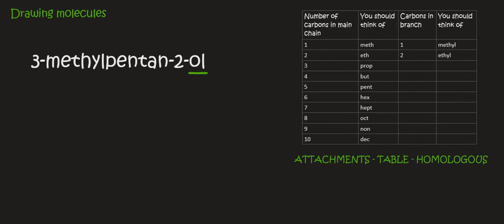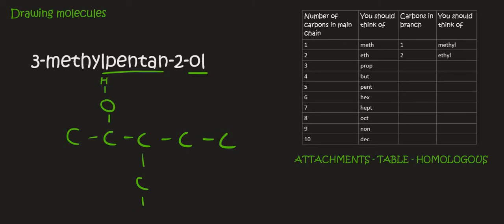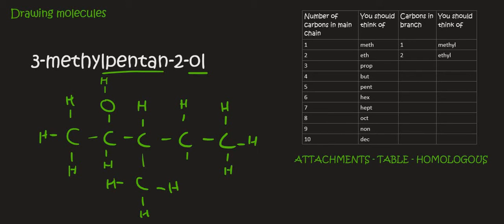Here we have an alcohol because it's got the '-ol'. We can start with the pentane part — that's going to be 5 carbons. Then on carbon 2 we have an OH, and on carbon 3 we will have a methyl. Then the rest is obviously just going to be hydrogens. You're going to get so tired of drawing these hydrogens — trust me. Eventually you draw them so much your pen starts making almost like a beat, forming a rhythm. Maybe it's just me.